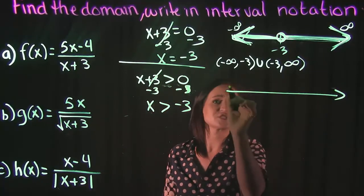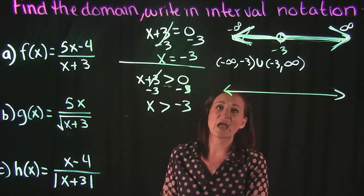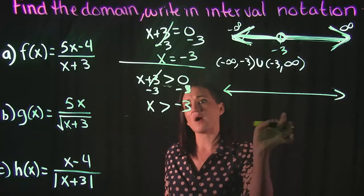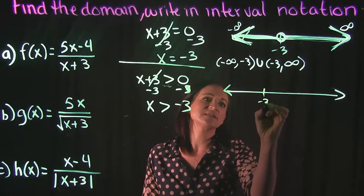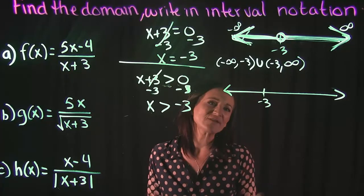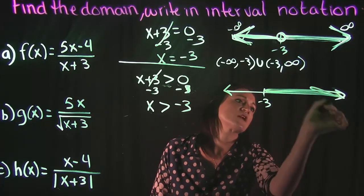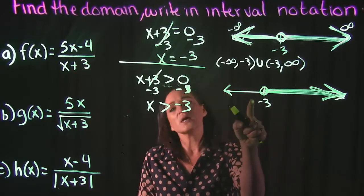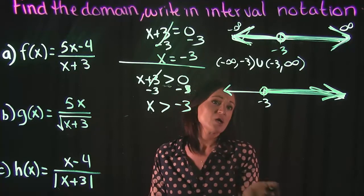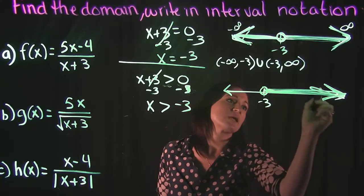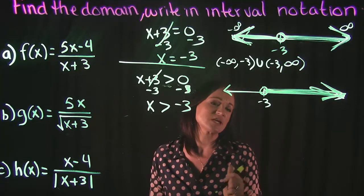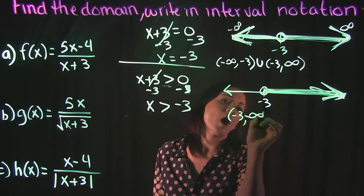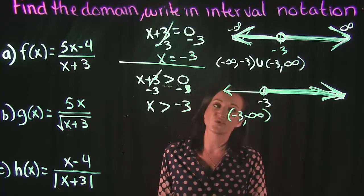A number line gives a good visual when writing interval notation. We graph x is greater than negative three — we want everything to the right of negative three. It can't actually equal negative three, so we have a hole there, but everything bigger works. The interval notation starts at negative three, going off to positive infinity on the right-hand side, with a parenthesis at negative three since it's not included.